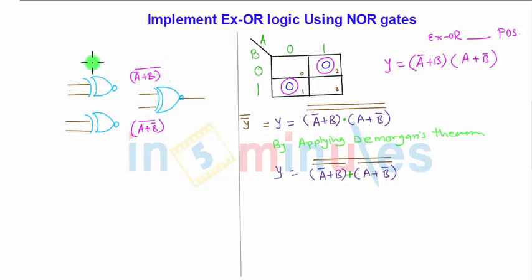So one of the input is A bar. This one is A bar and this is B, and for this one, this is A and the downside is B bar. With this we will get output as A bar plus B the complement and A plus B bar the whole complement.